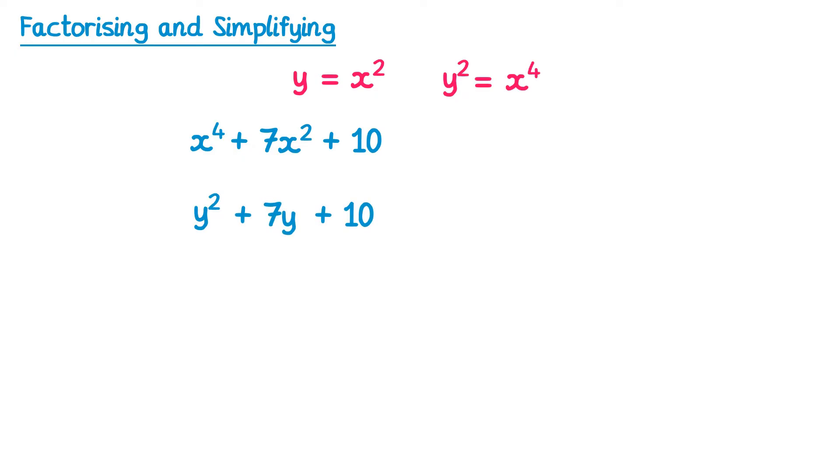Now this is a quadratic and we can factorise it. It comes out as (y + 5)(y + 2). Now what we do is substitute back so that we end up with x's again. Look at the first part of our substitution, y was equal to x², so we replace all of the y's in our answer with x². Instead of y + 5, it's x² + 5, and instead of y + 2, it's x² + 2.